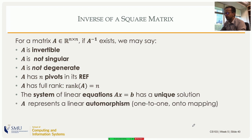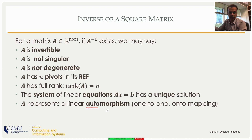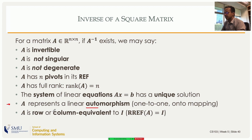If a matrix is invertible, it has n pivots, is full rank, and the system Ax = b has a unique solution. A fancier way of saying this is that A represents a linear automorphism — a one-to-one and onto mapping from a space to the same space. No two vectors will transform to the same vector; if they did, you could not invert the transformation.